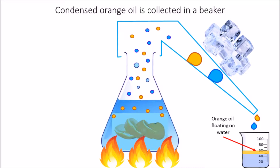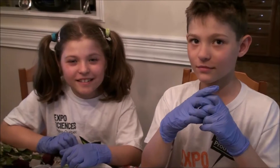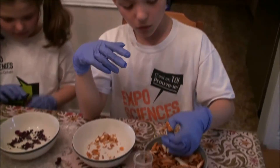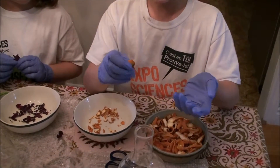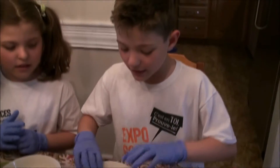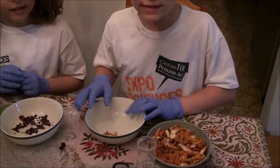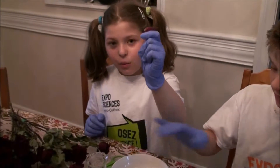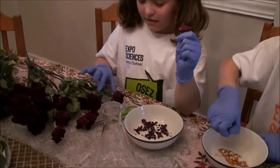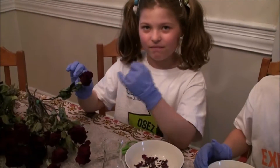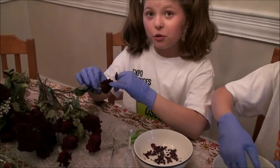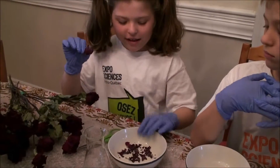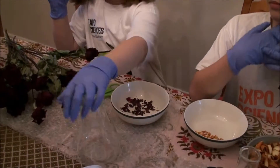Now we're preparing our distillation experiments. We're going to crush the orange skins — they're dried — into smaller pieces and put them in the beaker. And then we're going to crush rose petals from the roses over here. They're dried roses — we spent months drying them up. We're going to crush them up and put them all in a second beaker.